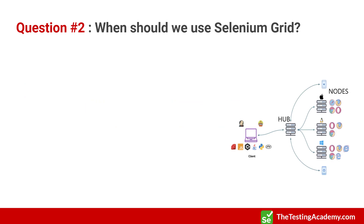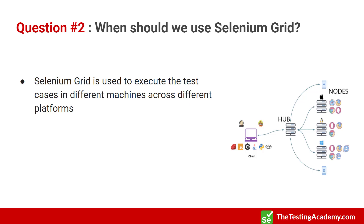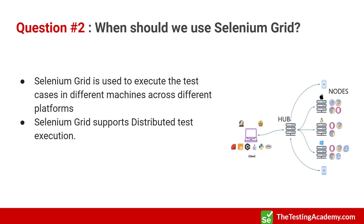Question two: Selenium Grid is mostly used for parallel execution and multiple browser support. You generally use it to execute test cases on different machines, and it supports distributed test execution. You can have a machine running a hub, and connect different nodes — separate machines on the same network. A node can be a Windows machine and node 2 can be a Linux machine running certain browsers. If you pass the correct desired capabilities, the hub redirects to the particular node matching those capabilities. This also supports parallel execution, saving your time.